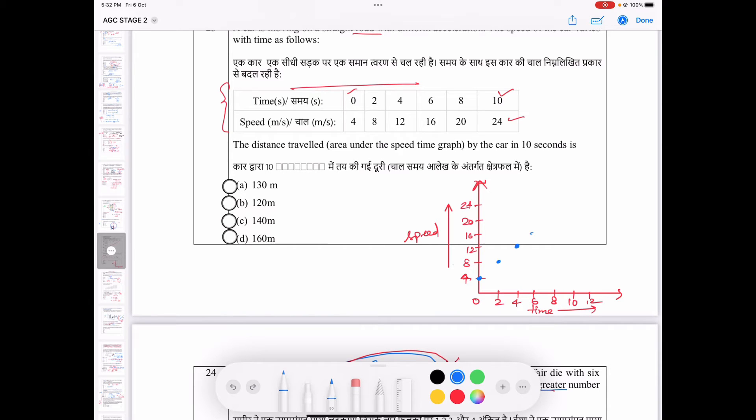Then speed of 8, 20, and 10 seconds is 24. So students, we will draw this line first and here we will join it by 10.